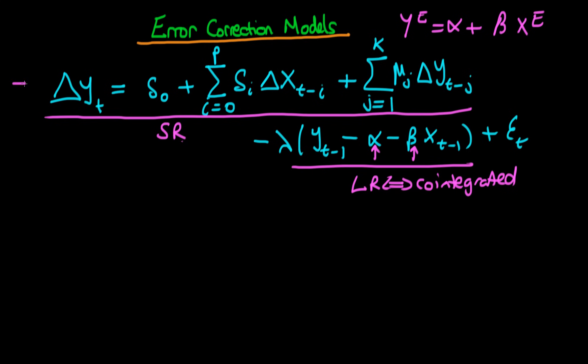But it turns out that Engle and Granger actually showed that we can estimate the parameters alpha and beta just using ordinary least squares. So if we use an ordinary least squares regression of y on x, then we can get the ordinary least squares estimates of alpha and beta. So that's alpha hat and beta hat, and also the residuals.